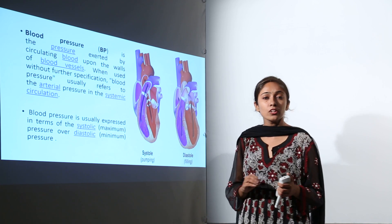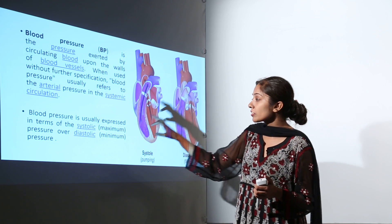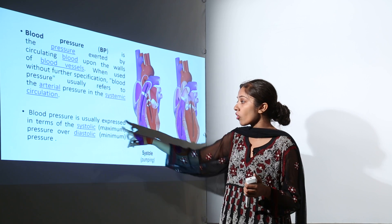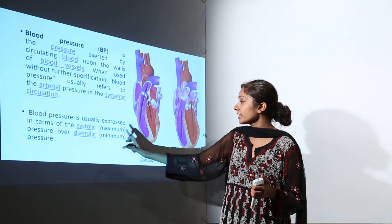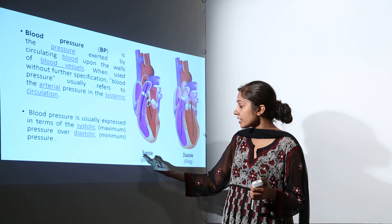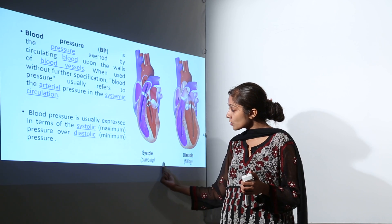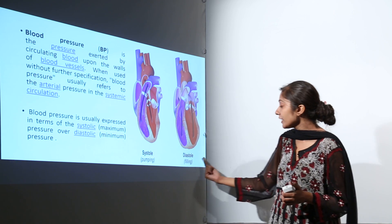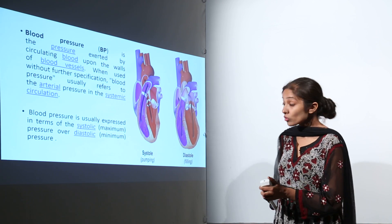You already know what systemic circulation is. Blood pressure is usually expressed in terms of systolic, that is maximum pressure, and diastolic, that is minimum pressure. Systole refers to when the heart is pumping blood, and diastole means when the ventricles are actually filled with blood.